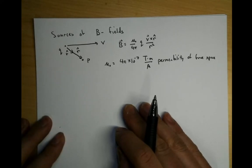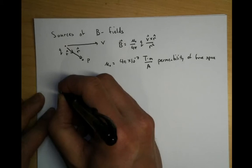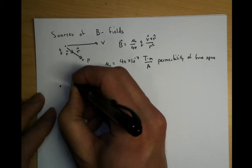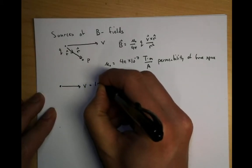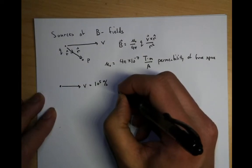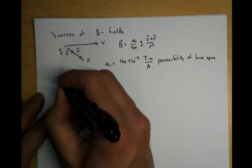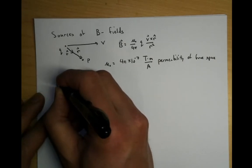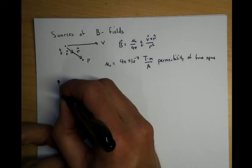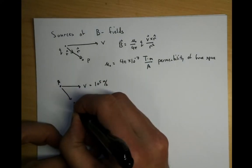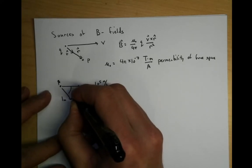Let's go ahead and do an example. Let me imagine that I have a charge moving with some velocity V. I'm going to set this velocity to 10 to the 5 meters per second. This charge is going to be a proton. I'm going to be interested in seeing the amount of magnetic field generated at point P, where this is basically one meter away, and it has some angle theta relative to the direction of motion.